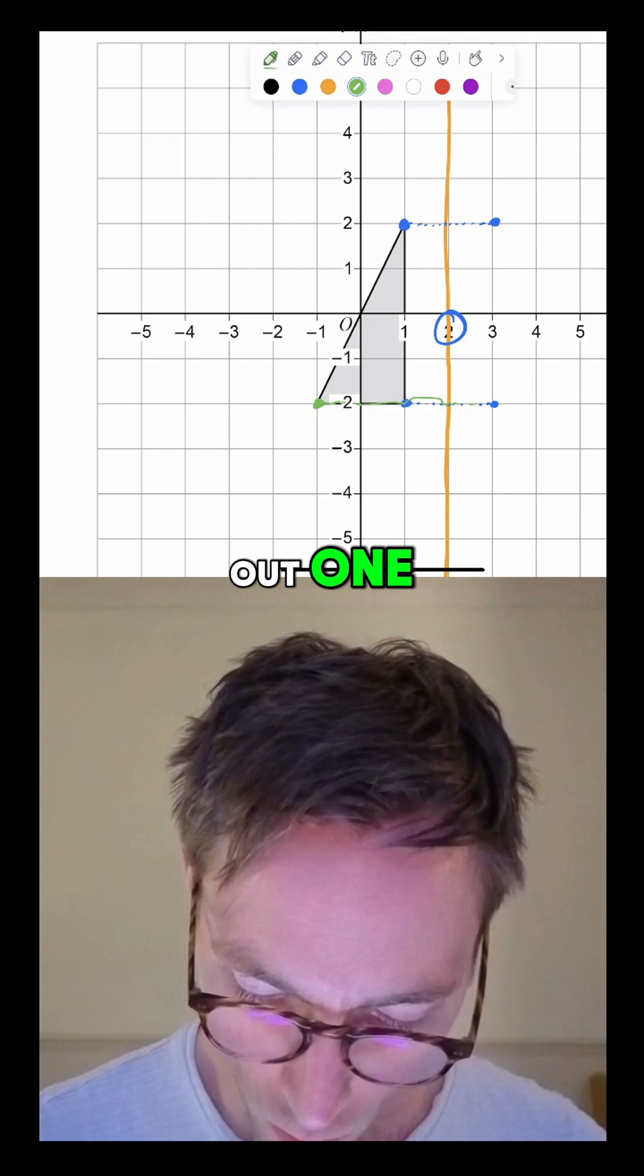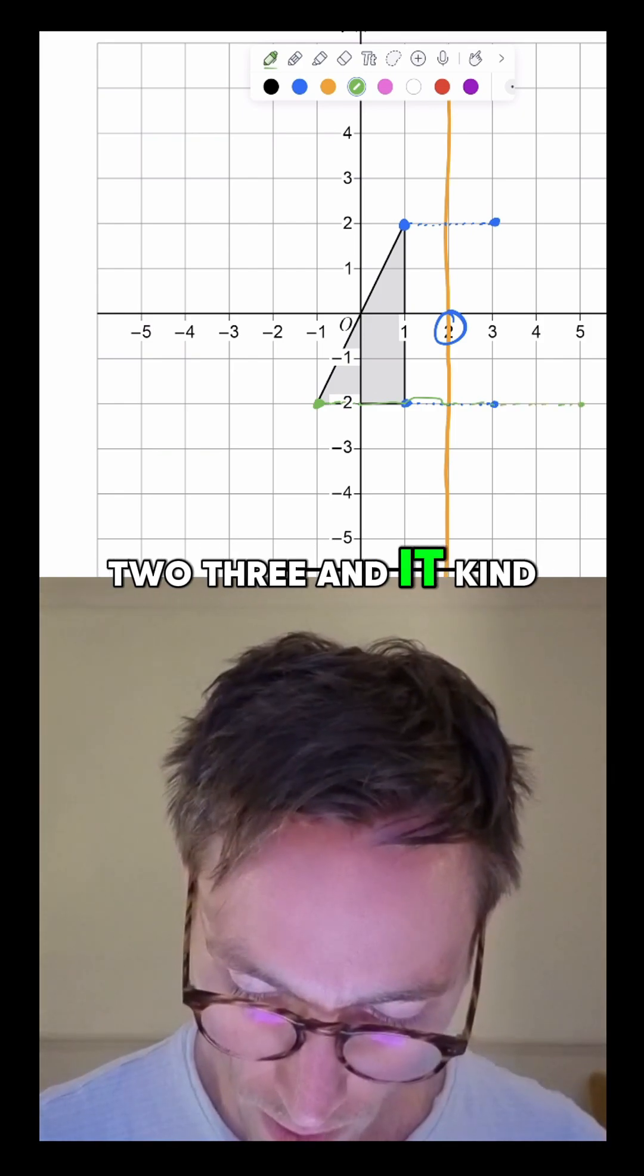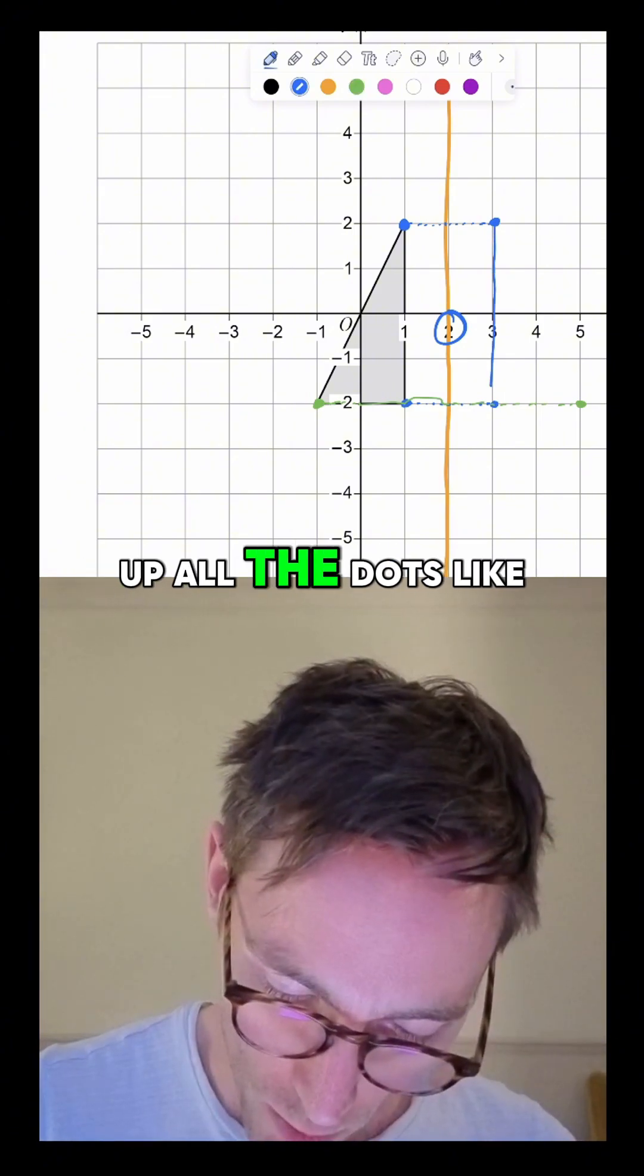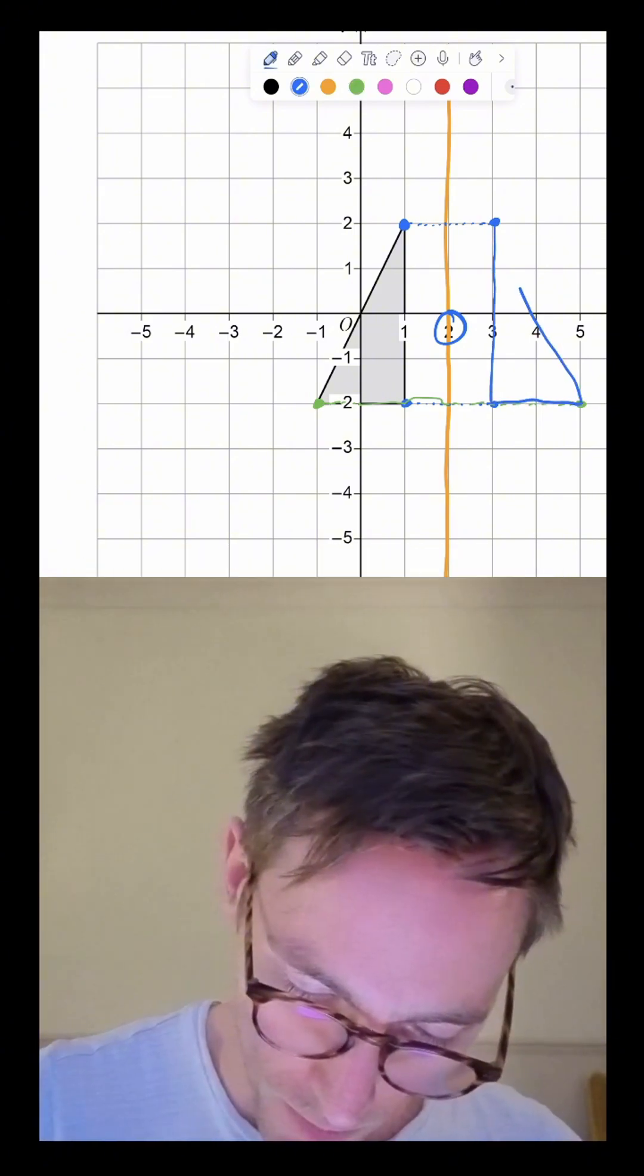So we go out one, two, three and it kind of goes there. So you're just going into that mirror line until you come out the other side, and then you just join up all the dots like that. Okay, that's how you do it.